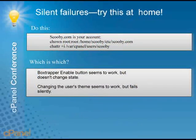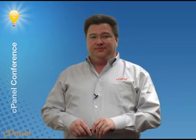We have a couple of practice examples. If you chown to root the /home/user/etc/domain file, and also make immutable the /var/cpanel/users file, it will cause two problems — not necessarily in that order. One will cause the BoxTrapper enable button to seem to work but not really work, and the other will cause the user's theme to seem to change but fail silently. These are things you can try at home and use strace to figure out which condition causes which problem.